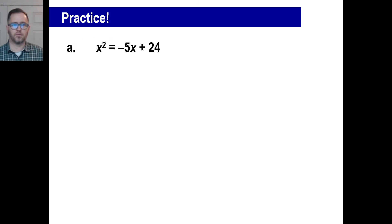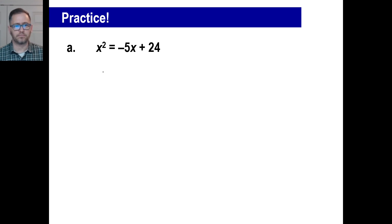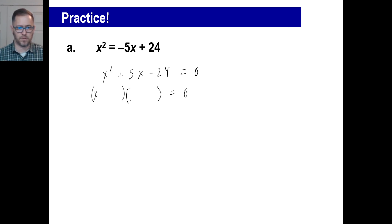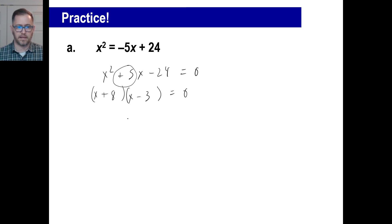Let's look at the practice problem. Moving the 5x over and the 24 over, leaving me with zero. That's a trinomial, so I bounce that into two binomials. I need two numbers that multiply to give a negative and add to give me positive 5 — that'll be positive 8 and negative 3. The answers are the opposite of those: negative 8 and positive 3.